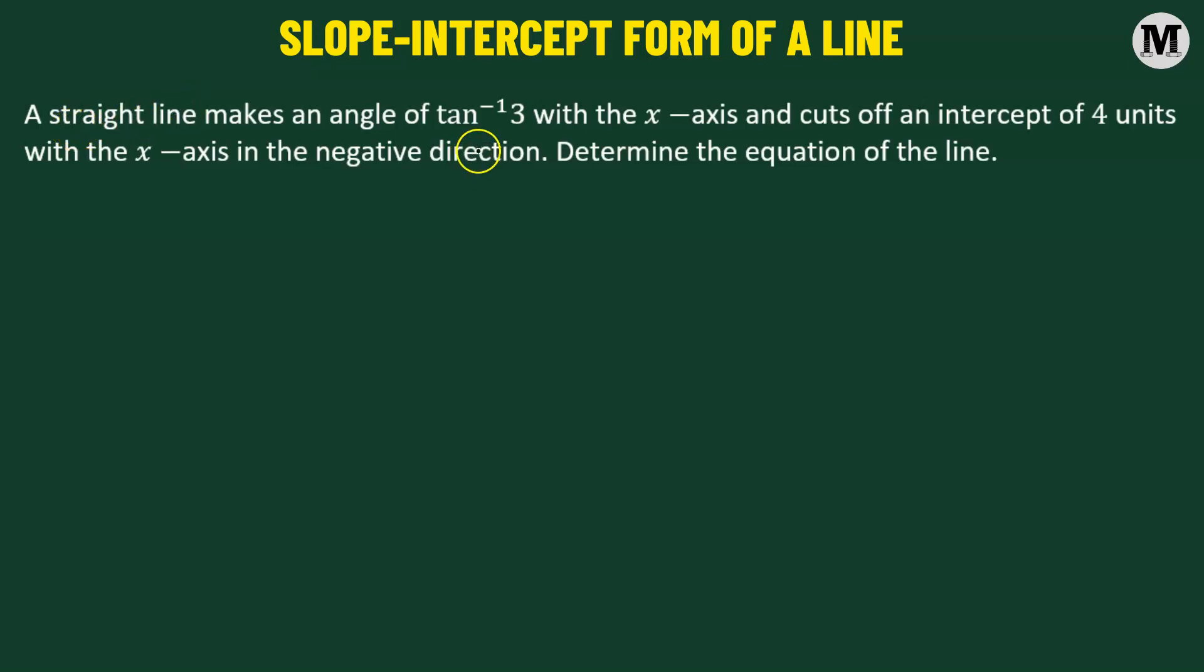A straight line makes an angle of tangent inverse of 3 with the x-axis and cuts off an intercept of 4 units with the x-axis in the negative direction. Determine the equation of the line.